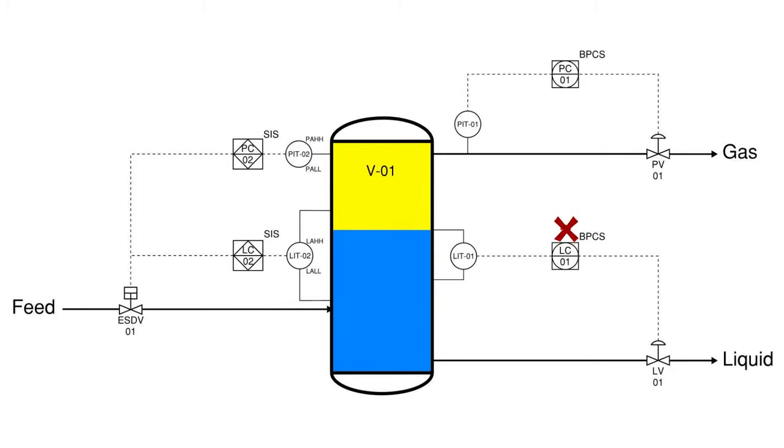If the BPCS controls fail and level in the vessel begins to increase, when the liquid level gets too high and reaches the set point of the level alarm, high-high or LAHH of LIT-2, the controller LC-2 will alarm and send the signal to close ESDV-1.